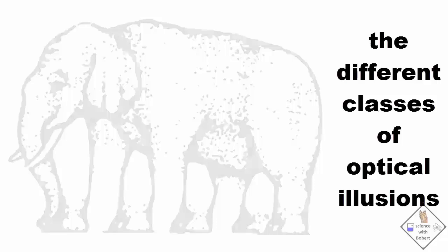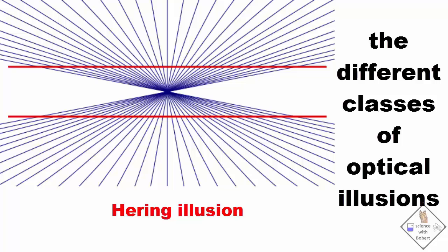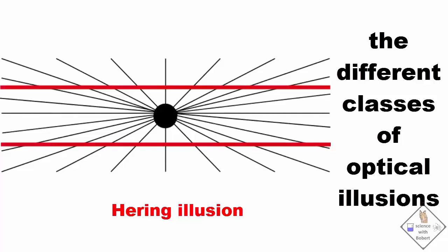This is a herring illusion. The two red parallel lines appear to be bent even though they are perfectly straight. This is also a bending parallel lines illusion, so it is also classified as a herring illusion.